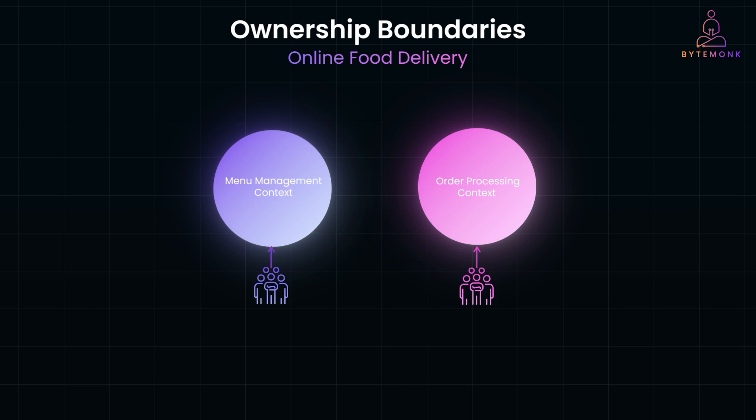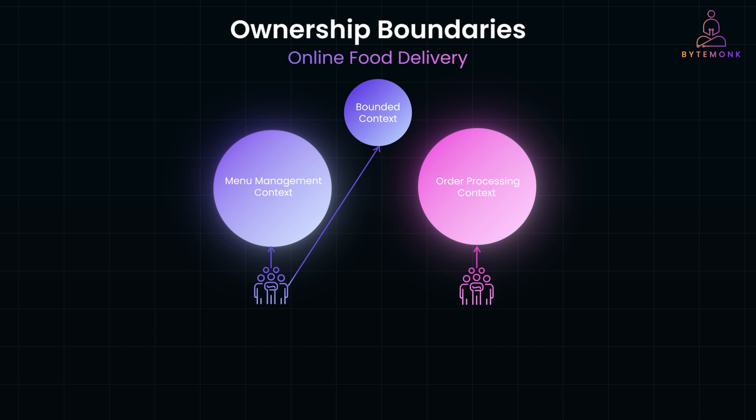It's important to note that the relationship between teams and bounded contexts is one-way: each bounded context is owned by one team. However, a single team can be responsible for multiple bounded contexts. Whether we are talking about physical systems, logical organization, or team ownership, these boundaries ensure the system remains scalable, maintainable, and aligned with business needs.